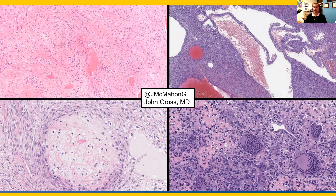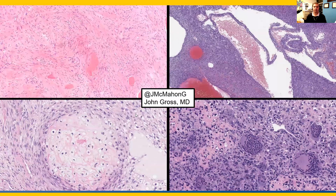The top right is telangiectatic osteosarcoma — what we are currently dealing with in our patient. Blood-filled cystic spaces; various areas are a little bit more solid and cystic. The amount of osteoid production can be quite focal, which is often why you will need to correlate with the radiographic features. The bottom left shows a focus of chondroblastic osteosarcoma surrounded by a more fibroblastic component. And the bottom right shows giant cell-rich osteosarcoma, with malignant cells producing mineralized osteoid and scattered abundant osteoclast-like giant cells.